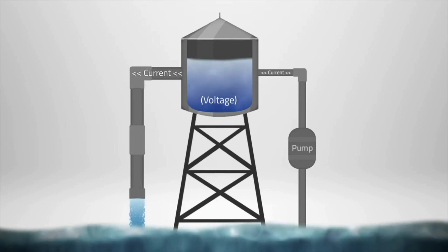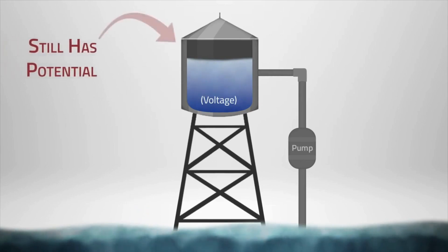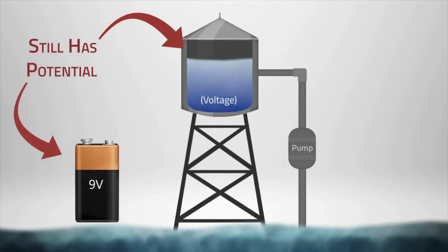And if we remove the second pipe altogether, there would no longer be a current but the potential energy or voltage would again remain the same, in the same way that a battery has a voltage associated with it even if it's not currently connected to a circuit or doing any work.